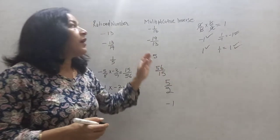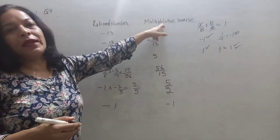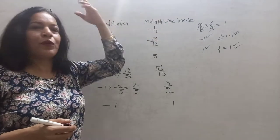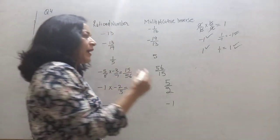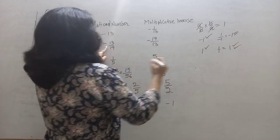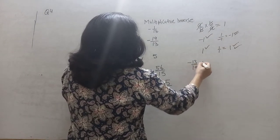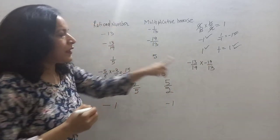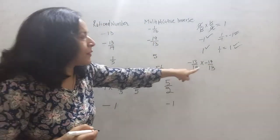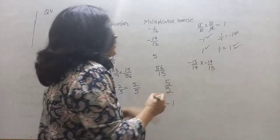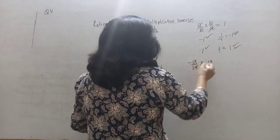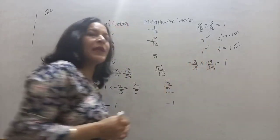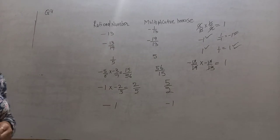The multiplicative inverse is the reciprocal of the number. When you multiply a rational number by its multiplicative inverse, the answer should be 1. For example, minus 1 into minus 1 equals plus 1.